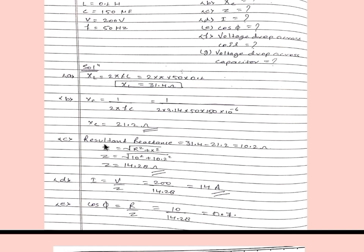Now we have to find the impedance. First we find the resultant reactance, which is XL minus XC — that is 31.4 minus 21.2 — giving us 10.2 ohm. We know that impedance Z is equal to the square root of R squared plus X squared. Putting in the values of R and X, we get Z equal to 14.28 ohm.